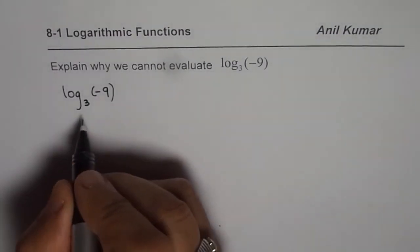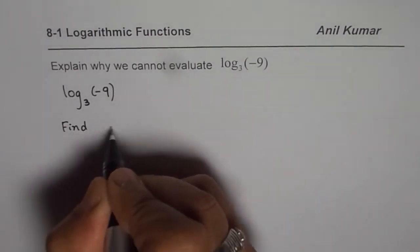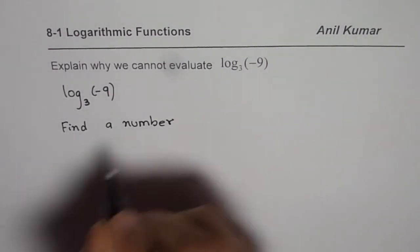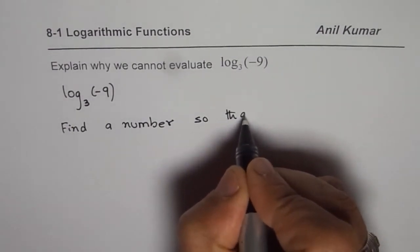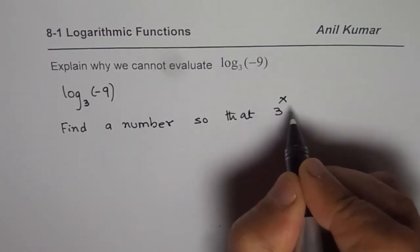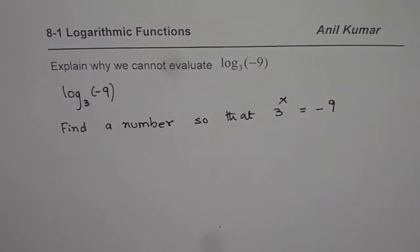It really means find a number so that 3 to the power of that number, let it be x, is equal to -9. That is what it means, right?